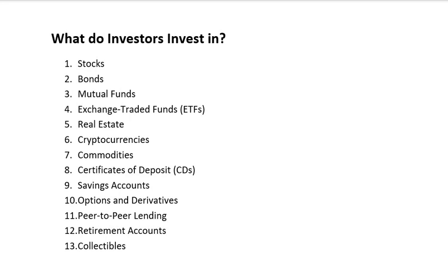Fourth is exchange traded funds. Exchange traded funds are similar to mutual funds; however, they trade on stock exchanges. They often track particular market indices or sectors. Fifth is real estate: investors can invest in physical properties or real estate investment trusts, which are companies that own, operate, or finance income-generating real properties. Sixth is cryptocurrencies. Digital cryptocurrencies such as Bitcoin have gained popularity as alternative investments. They operate on blockchain technology and are known for their price volatility.